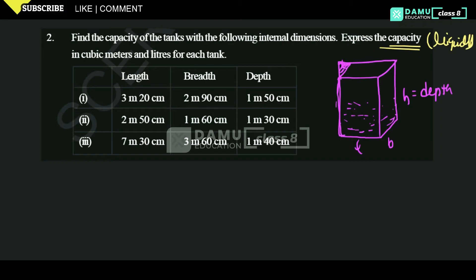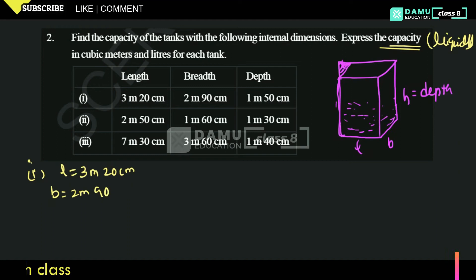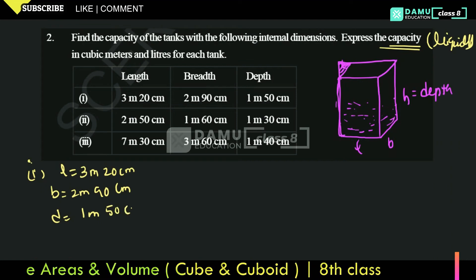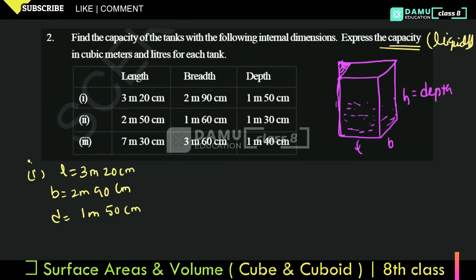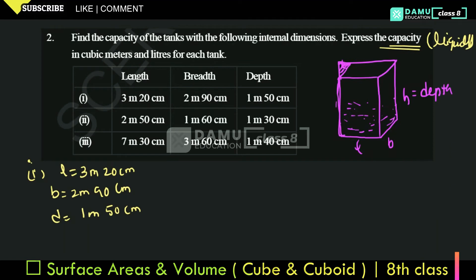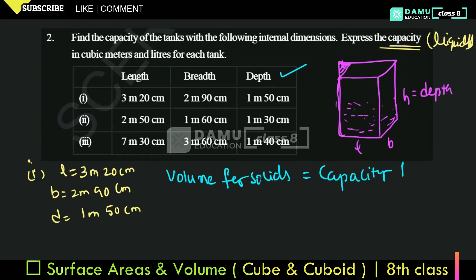Starting with the first tank: length is equal to 3 meters 20 centimeters, breadth is equal to 2 meters 90 centimeters, and depth is equal to 1 meter 50 centimeters. Since it contains liquid, we find capacity rather than volume.